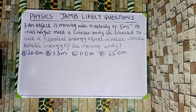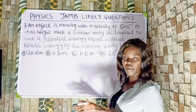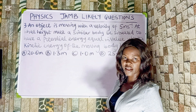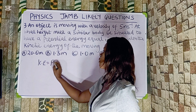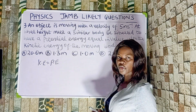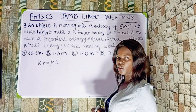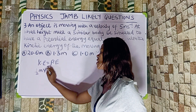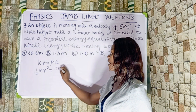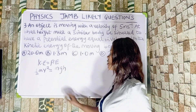Next question: an object is moving with a velocity of 5 meters per second. At what height must a similar body be situated to have potential energy equal in value to the kinetic energy of the moving body? Option A: 20.0 m, Option B: 1.3 m, Option C: 1.0 m, Option D: 25.0 m. We set kinetic energy equal to potential energy: ½mv² = mgh.